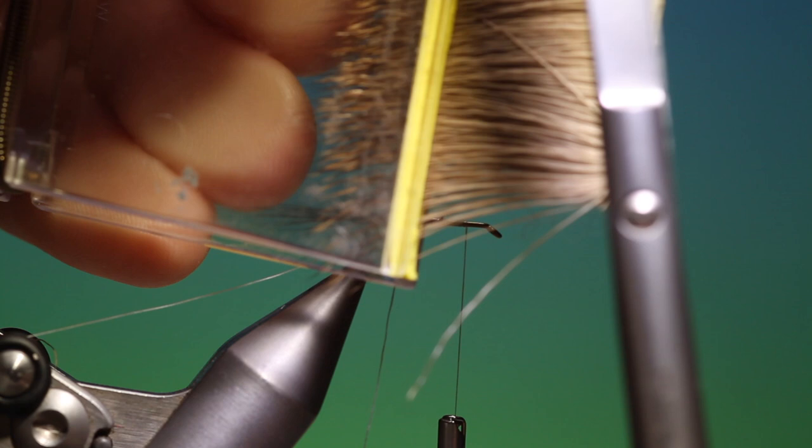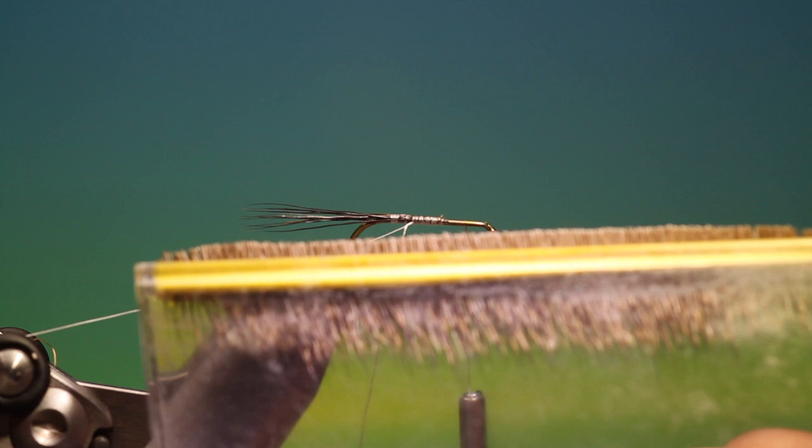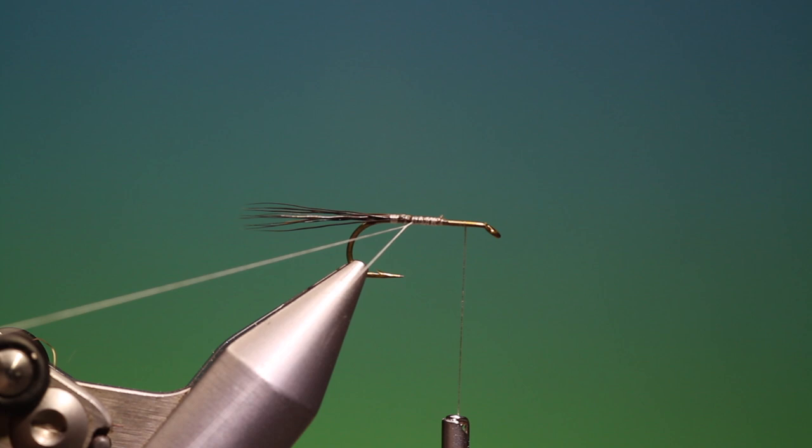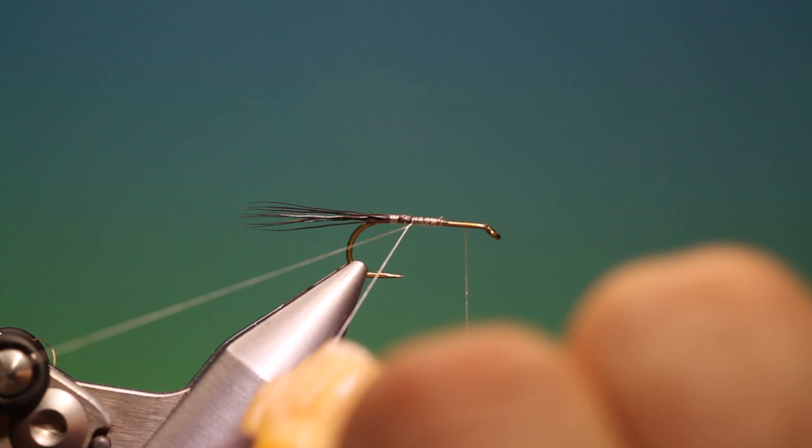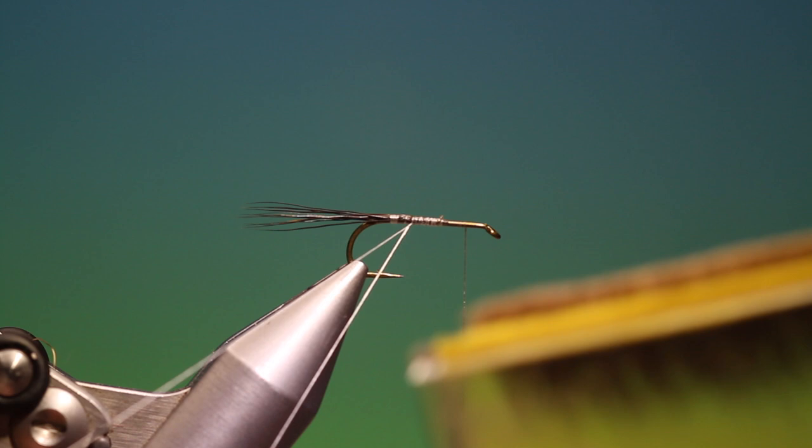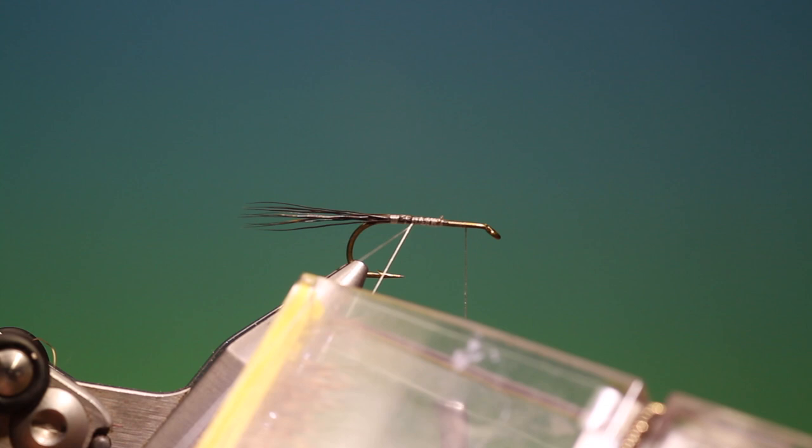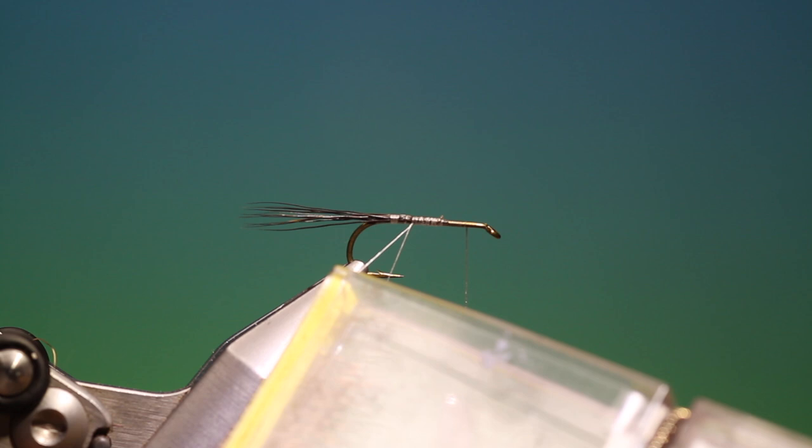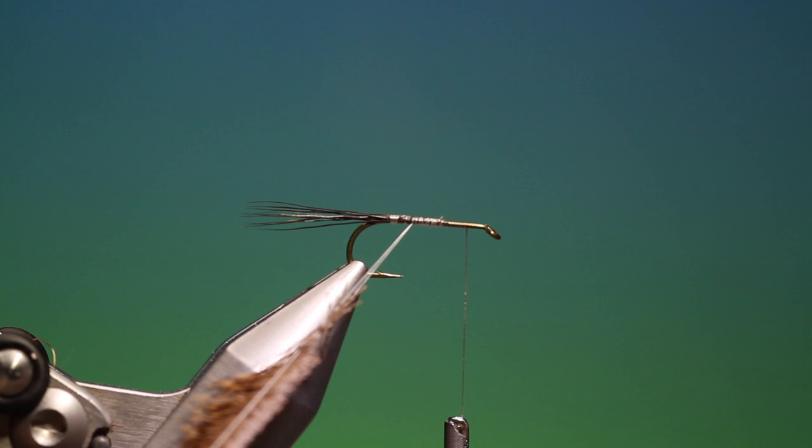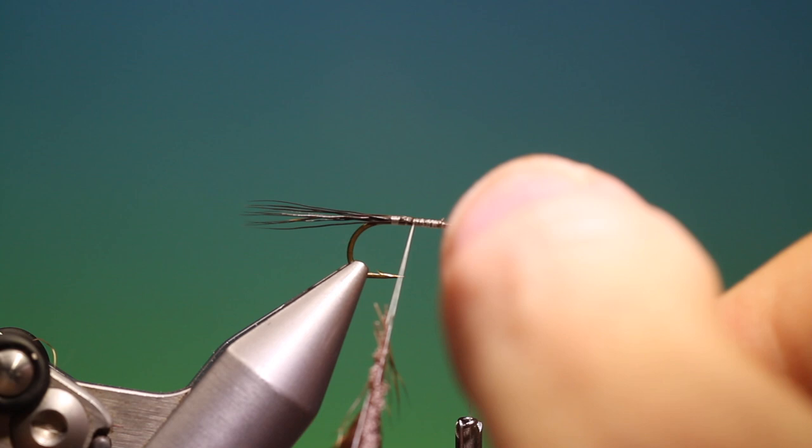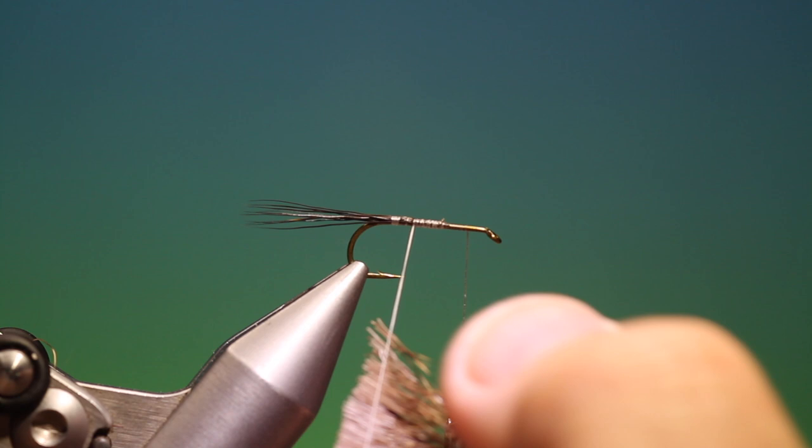So there we are, I've cut the deer hair now so we've still got that little edge. Take our dubbing loop and I take a little wax—this will just help the deer hair get a purchase. And then, supporting my hand on the vise and my other hand on the table, put our clip in, catch the deer hair, and we can adjust it as we will. And then we can spin it up.